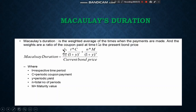That first method used a table approach. You can also use the formula directly. The formula involves: the time period, periodic coupon payment, periodic yield (y), total number of periods, and maturity value. This formula gives the same result as the table method.